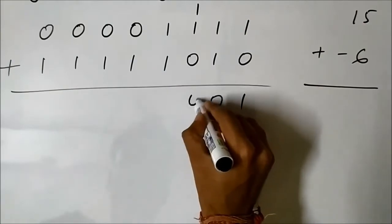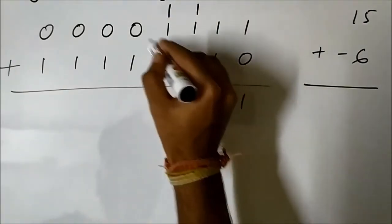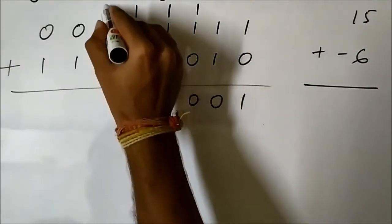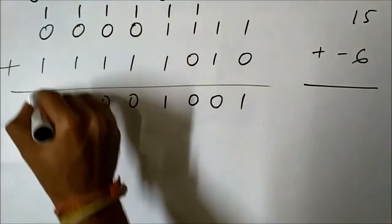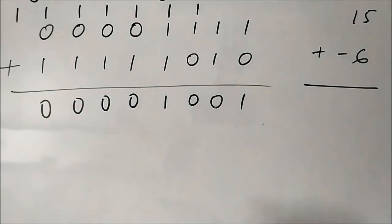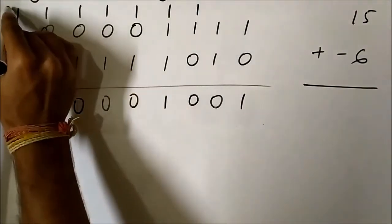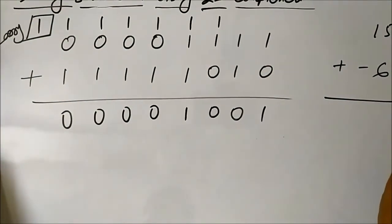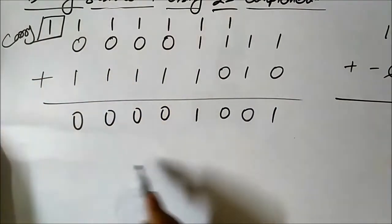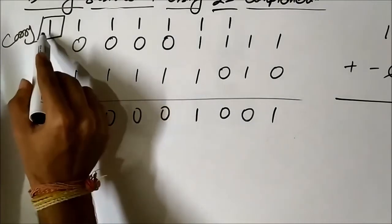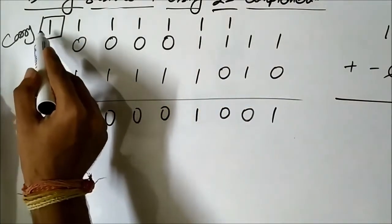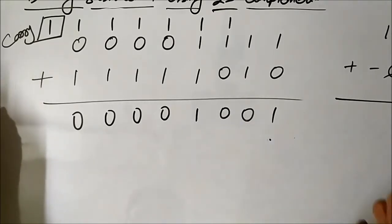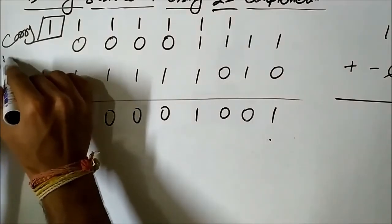1 plus 1 is 0 with a carry of 1. Again, 1 plus 1 is 0 with a carry of 1, and 1 plus 1 is 0 with a carry of 1, but that 0 is added with 1. So 1 plus 1 is 0 with a carry of 1, plus 1 is 0 with a carry of 1. This carry bit which is generated — the final carry — in case of 1s complement, we used to add this carry to the LSB. But in case of 2s complement, we will discard this carry, we will neglect it.